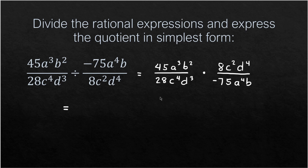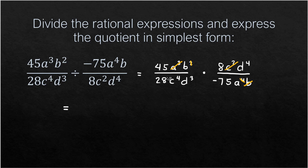Let us start with A. We have A³ and A⁴ — since 4 minus 3 is 1, one A remains in the denominator. For B, we have B² and B — B cancels out, leaving one B in the numerator. For C, we have C² and C⁴ — C² cancels, leaving C² in the denominator.